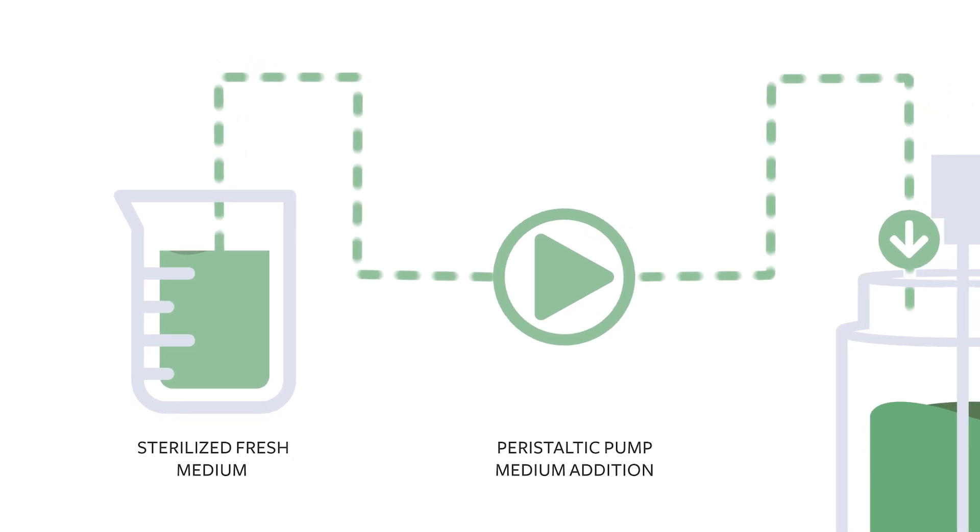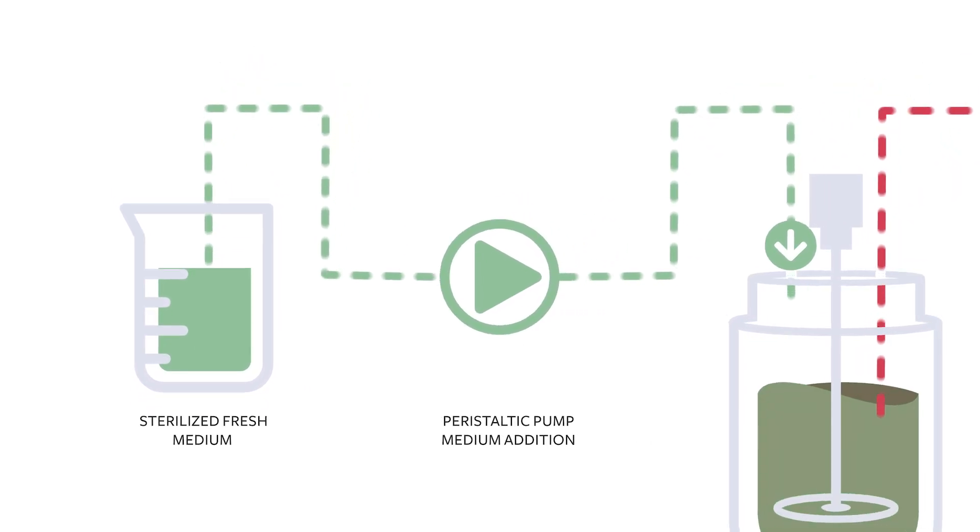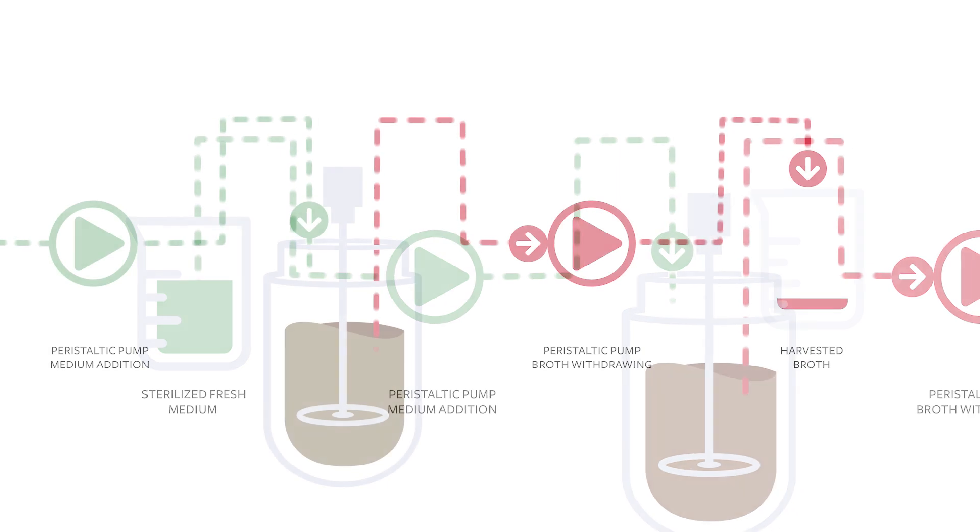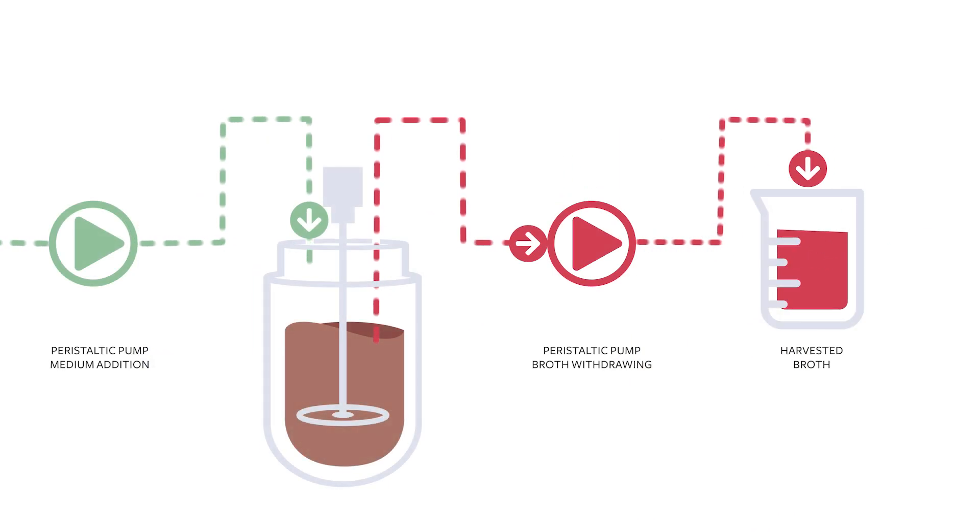In continuous process, you have an addition of the limiting substrate to the bioreactor while the culture growth, which contains cells and metabolites, is withdrawn at the same time.